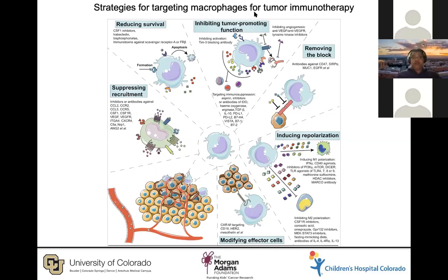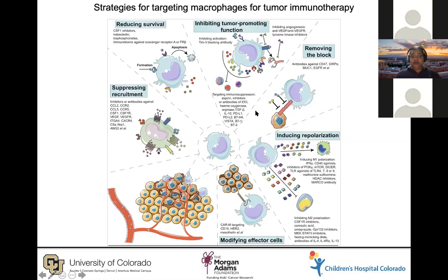Various ways of targeting macrophages include inhibiting their tumor-promoting function, blocking their cytokine secretion, or suppressing their recruitment — for example, by targeting the CCR2 pathway. CSF1 inhibitors can reduce macrophage survival. But what I'll mostly talk about today are two major points: first, removing the phagocytosis checkpoint blockade using reagents targeting the CD47–SIRPα pathway; and second, using chimeric antigen receptor-expressing macrophages.